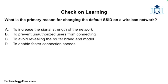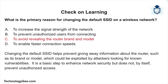Question 1: What is the primary reason for changing the default SSID on a wireless network? Is it to increase signal strength, to prevent unauthorized users from connecting, to avoid revealing the router brand and model, or to enable faster connection speeds? The correct answer is to avoid revealing the router brand and model. Changing the default SSID helps prevent giving away information that could be exploited by attackers looking for known vulnerabilities.